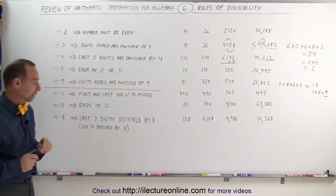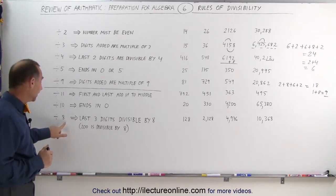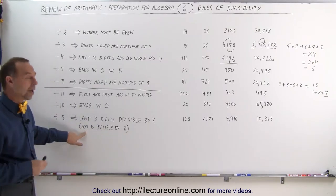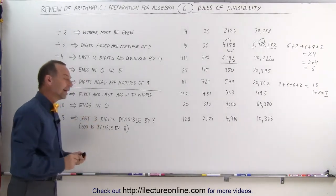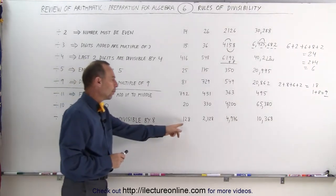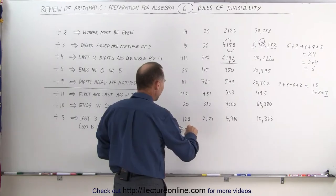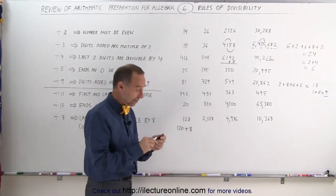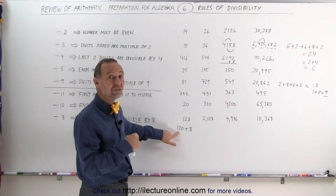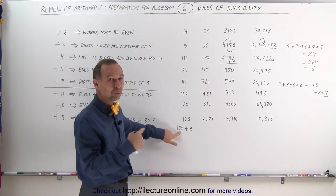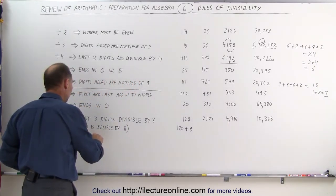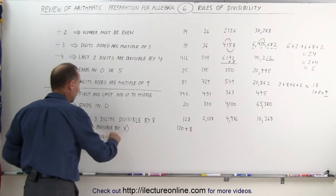Finally, let's take a look at divisibility by 8 — not by 800! It turns out that 200, 400, 600, 800, and 1,000 are all divisible by 8. All we have to do is look at the last 3 digits and see if they are divisible by 8. For the number 128, I can think of that as 120 plus 8. I know 8 can be divided by 8, and 120 can be divided by 8 because 120 is 3 times 40, and 40 divided by 8 is 5. So 120 — a multiple of 40 — can be divided by 8. We're looking for multiples of 200 and multiples of 40, and 40 is divisible by 8 as well.